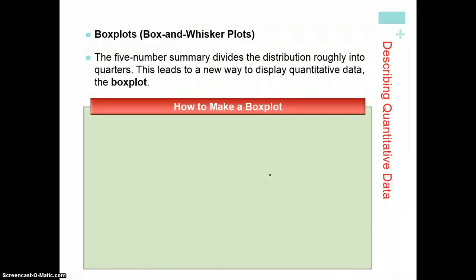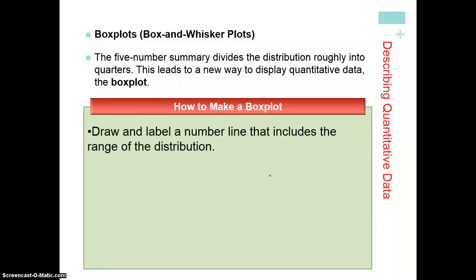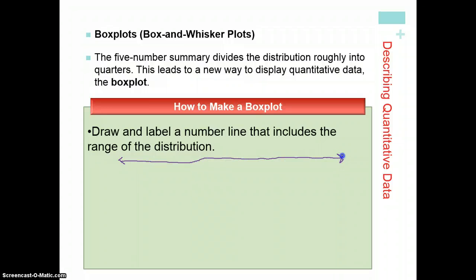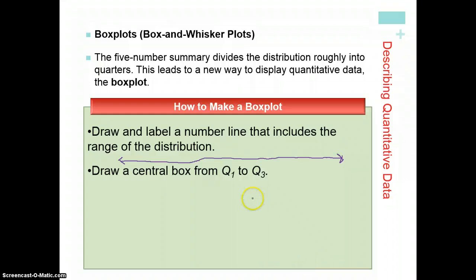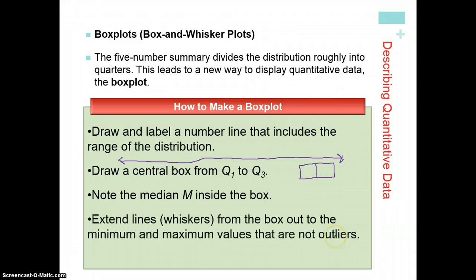So how to make a box plot: you draw and label a number line, so you have an x-axis, and you label it according to the range of your data. Draw a central box from Q1 to Q3. You note that the median is inside the box, so wherever the median falls you note it by that, and you extend lines to your min and max values unless there are outliers present.